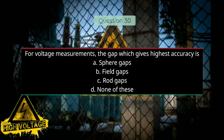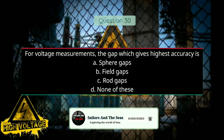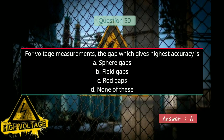Question number thirty: For voltage measurements, the gap which gives highest accuracy is — Option A: sphere gaps, Option B: field gaps, Option C: rod gaps, and Option D: none of these. Answer will be A, sphere gaps. Thank you for watching this video.